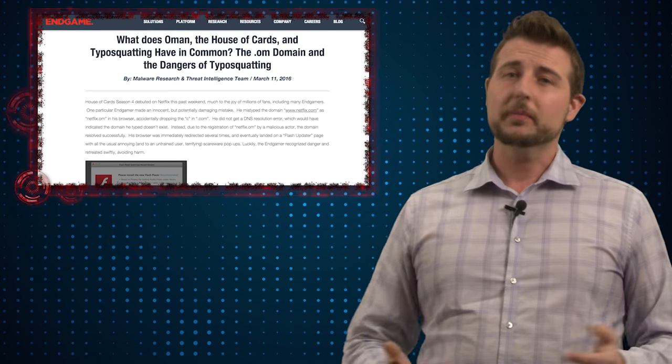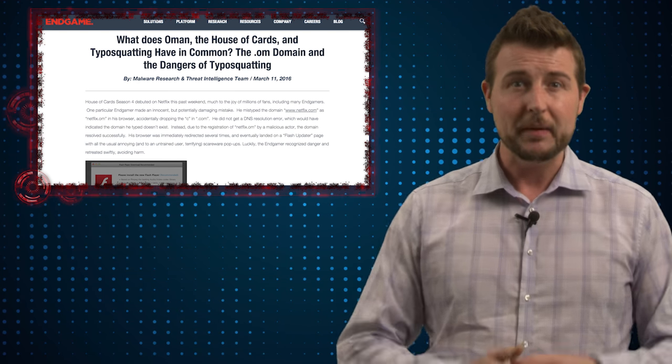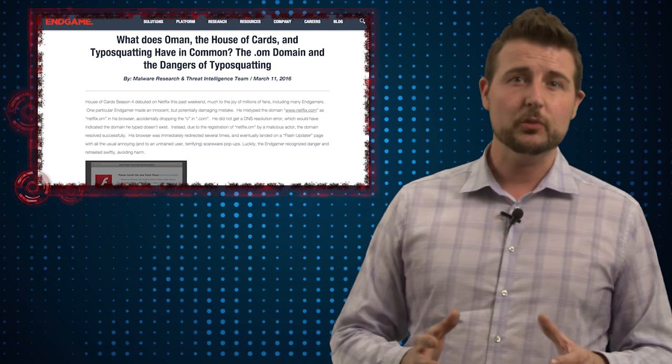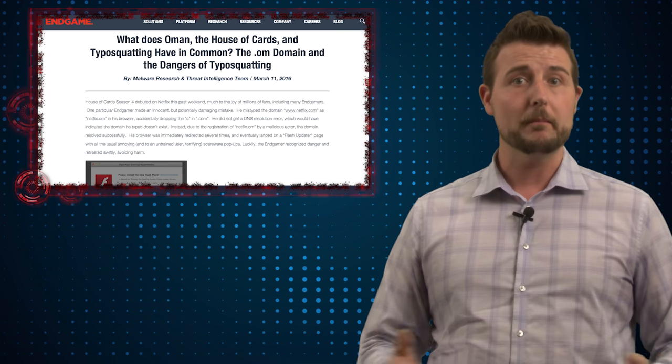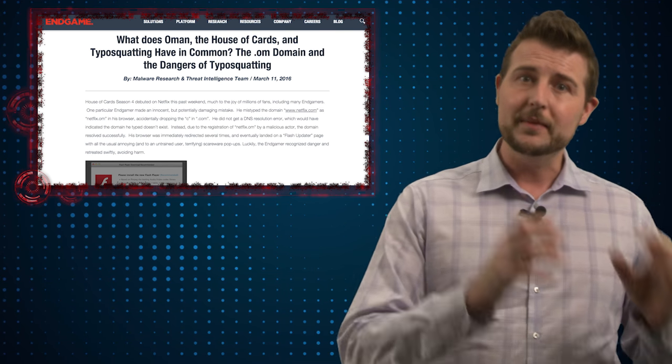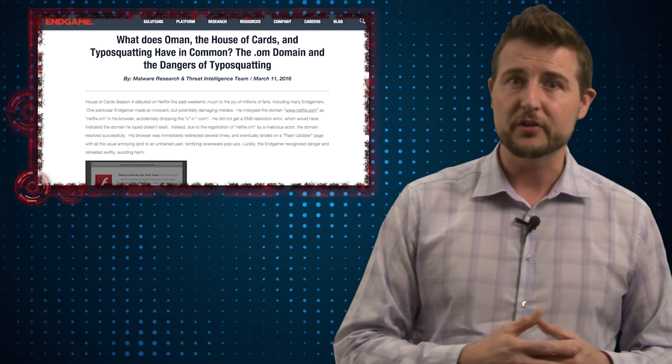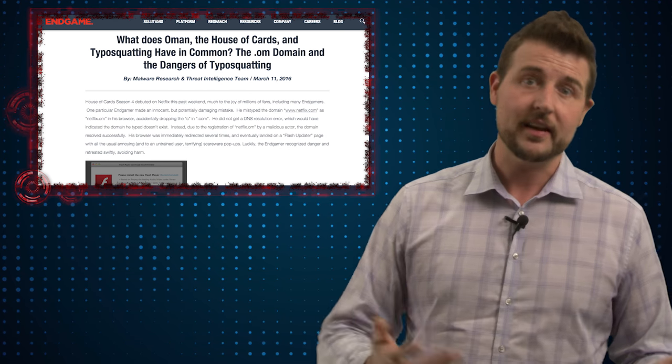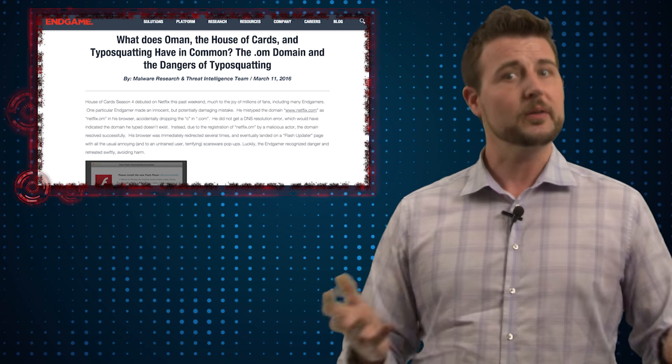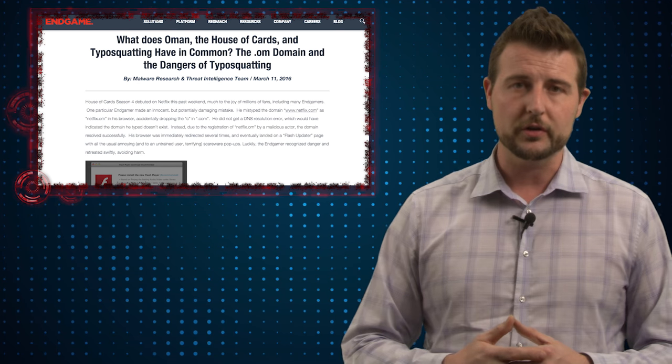Now, the second story is similar, but it comes from researchers at Endgame. They found that malicious actors were leveraging typo-squatting to entice victims to their malware. For instance, if you type Netflix but you mistype it in a certain way, you might be sent to a malicious site and perhaps that site uses the Angler Exploit Kit or some other kit to push malware to your computer.